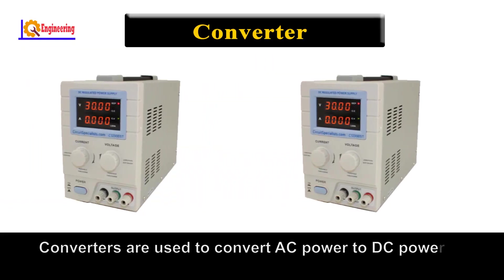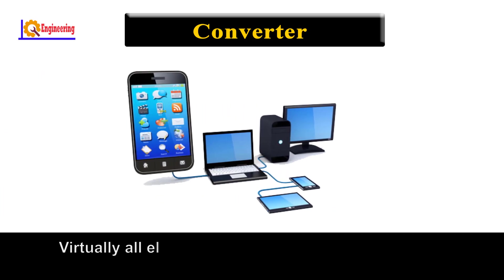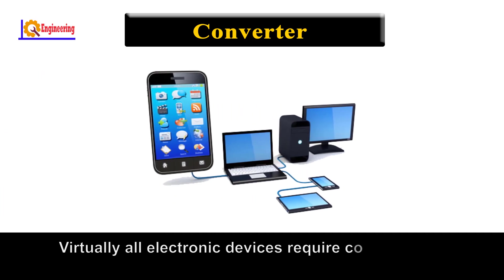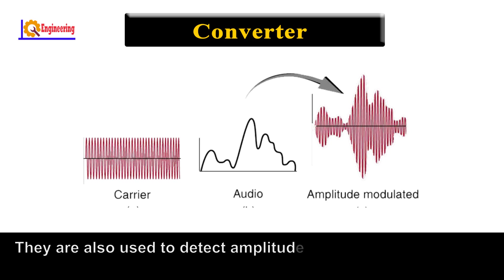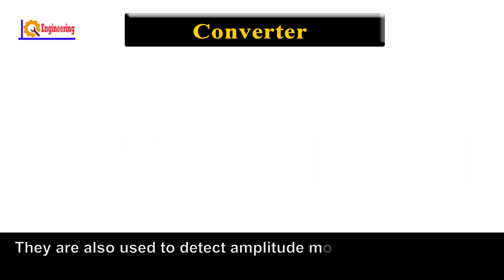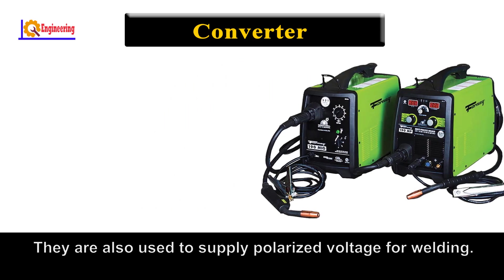Converters are used to convert AC power to DC power. Virtually all electronic devices require converters. They are also used to detect amplitude modulated radio signals, and to supply polarized voltage for welding.